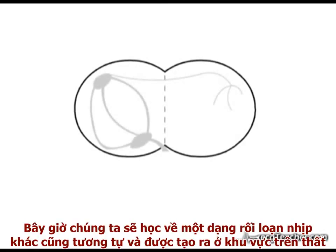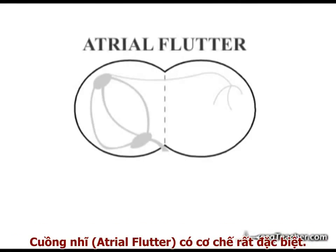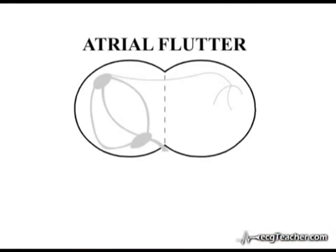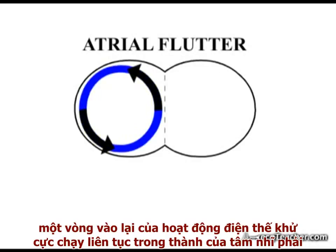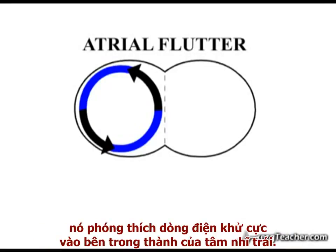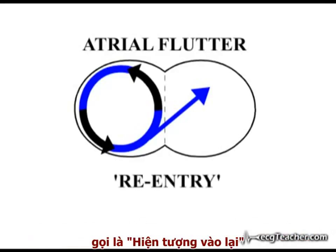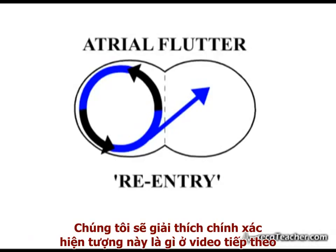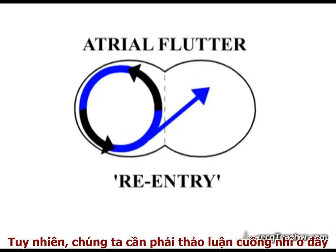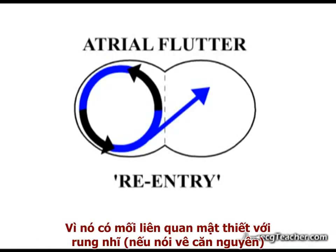We will now study a related arrhythmia generated in the supraventricular region. Atrial flutter arises by a very specific mechanism. In this arrhythmia, a loop of depolarizing activity circulates constantly within the walls of a diseased right atrium, discharging depolarizing current into the left atrium. This is a re-entrant loop, and is our first encounter with the phenomenon of re-entry. We will explain exactly what this means in the next videos; however, we need to discuss atrial flutter here as it is closely related in terms of etiology to atrial fibrillation.